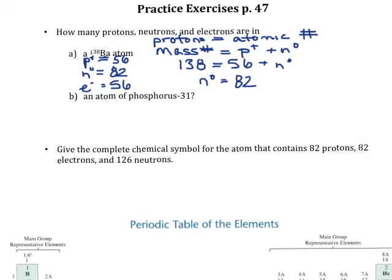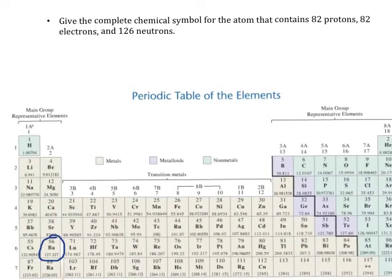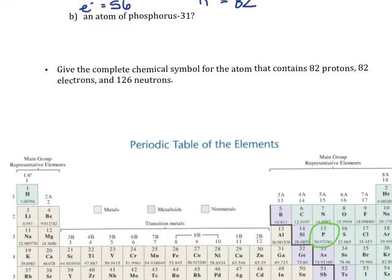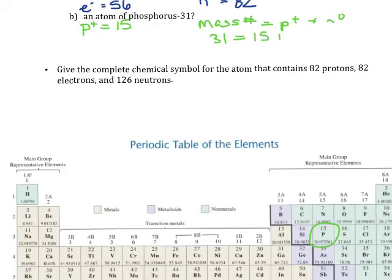We can do something similar for the next one. We're looking at an atom of phosphorus-31. This is a different way to write the notation, but again they're telling us we have phosphorus. So we can look in the periodic table for phosphorus — phosphorus has an atomic number of 15, and that tells us how many protons we have, so protons equals 15. Then we look at the mass number: mass number equals protons plus neutrons. The mass number is 31, and we have 15 protons, so the rest of the mass must come from neutrons, and there must be 16 neutrons.